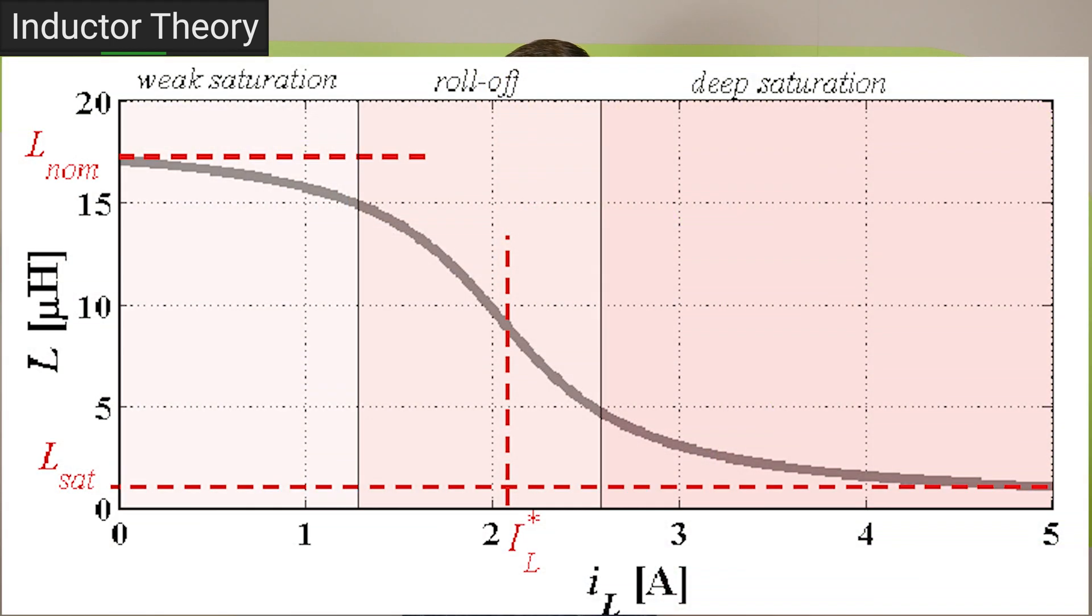more and more flux into the core of a transformer or an inductor, driving it further into saturation, that inductor will start to behave more and more like a wire. The effective inductance drops and will eventually approach zero if we push enough current through.